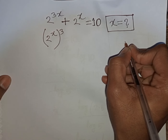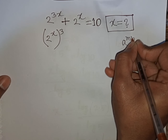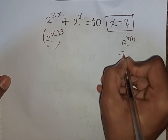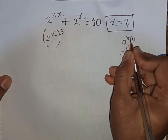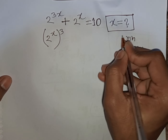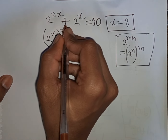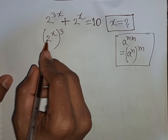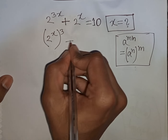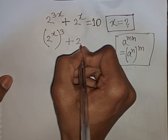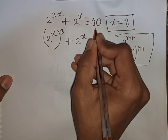According to the exponential rule, a to the power of mn is equal to a to the power n, bracket to the power m. So according to this formula, 2 to the power of 3x is the same as (2^x)^3, then plus 2 to the power x is equal to 10.